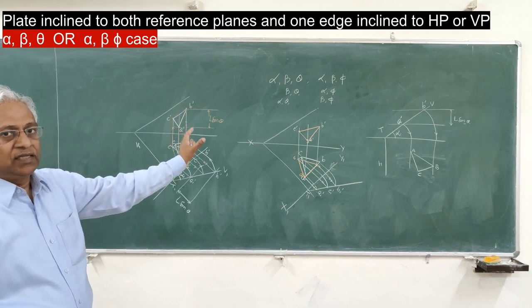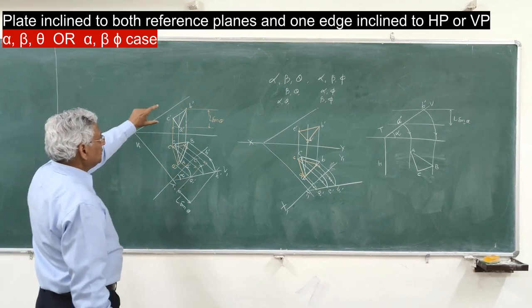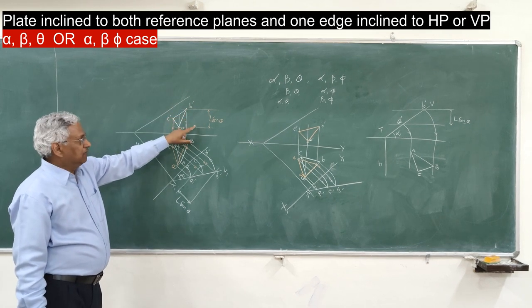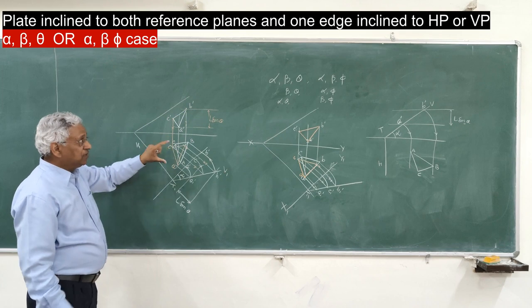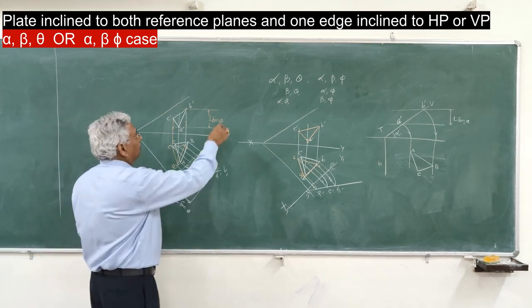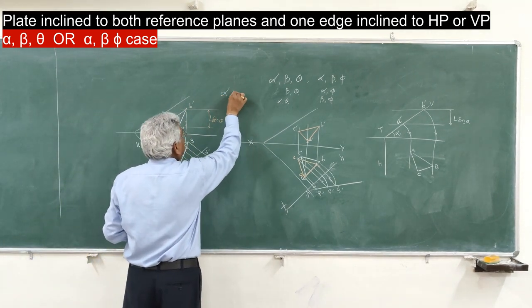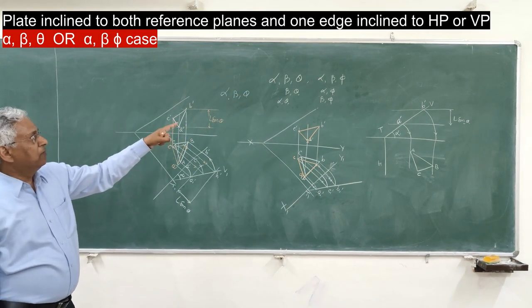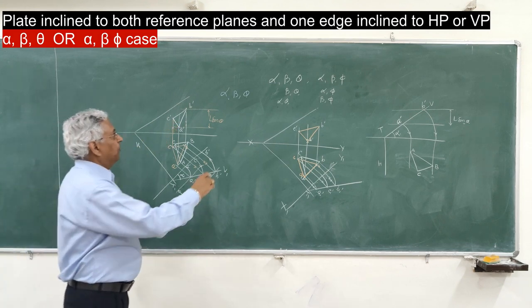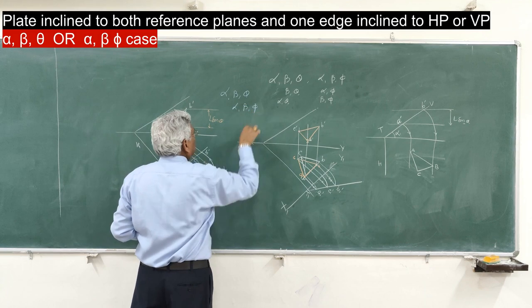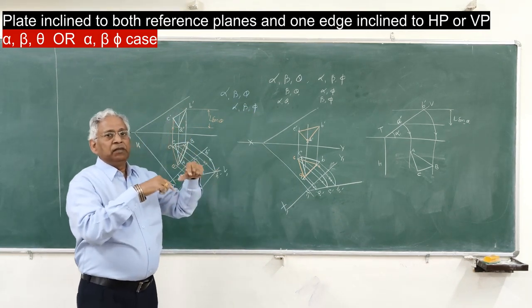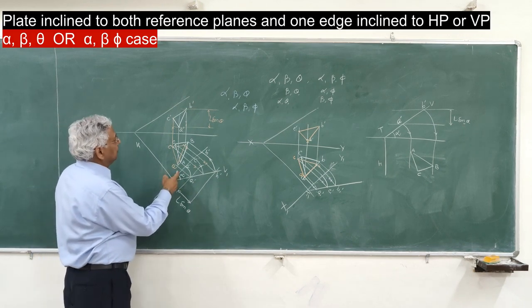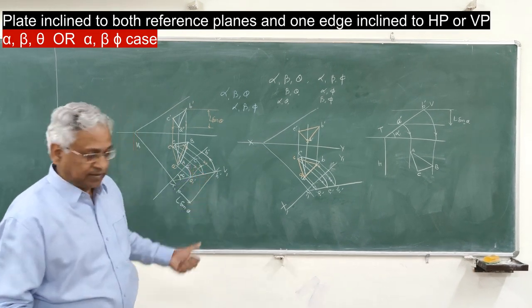So now the line AB, or edge AB, makes angle theta in the plan and the plate is oblique. That is, you solve the alpha-theta case. Similarly, you can do the alpha-beta-phi case. In the alpha-beta-phi case, the angle phi can be measured in the horizontal plane. So you can directly consider this case.